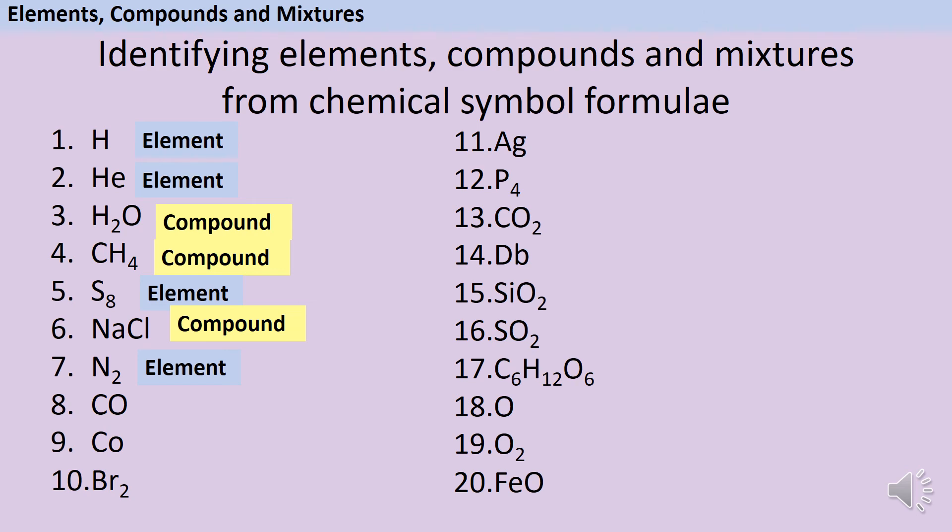Number eight represents carbon monoxide, a dangerous compound. Not to be confused with cobalt, number nine, which is an element. You can see here how important it is that you make sure that it's really clear whether you're writing a capital letter or a lowercase letter, because it could completely change the substance you're writing about. Carbon monoxide is a colourless, odourless, toxic gas, whereas cobalt is a magnetic metal. Very different.